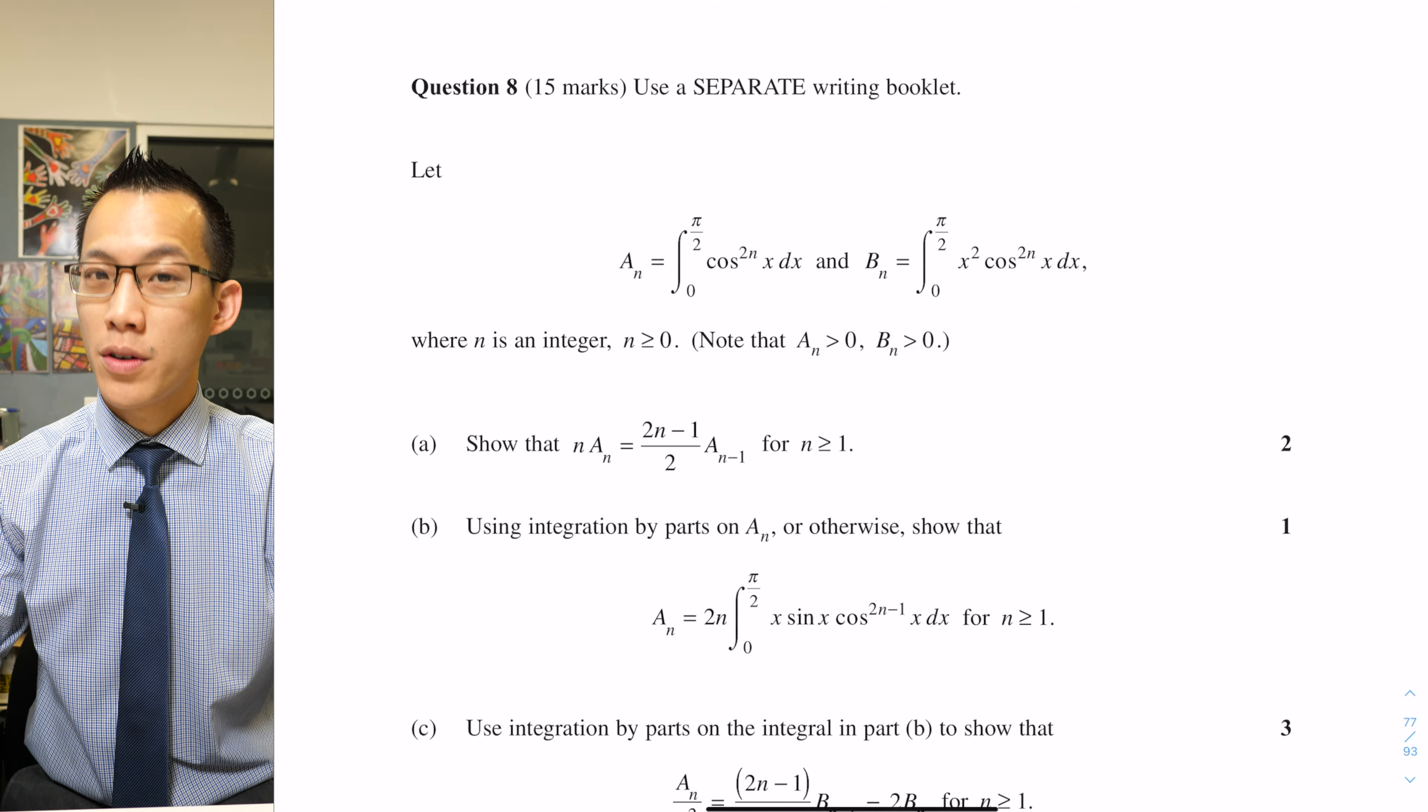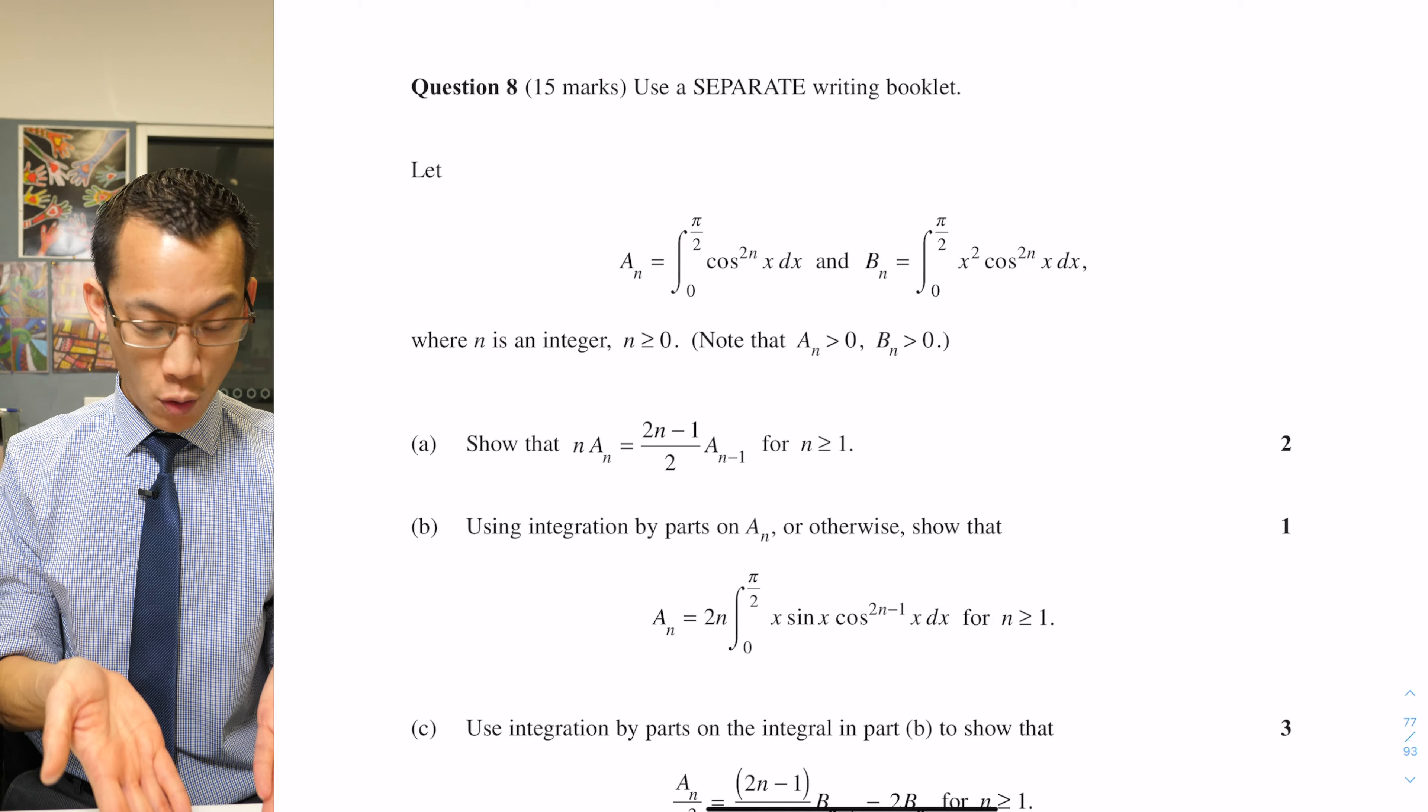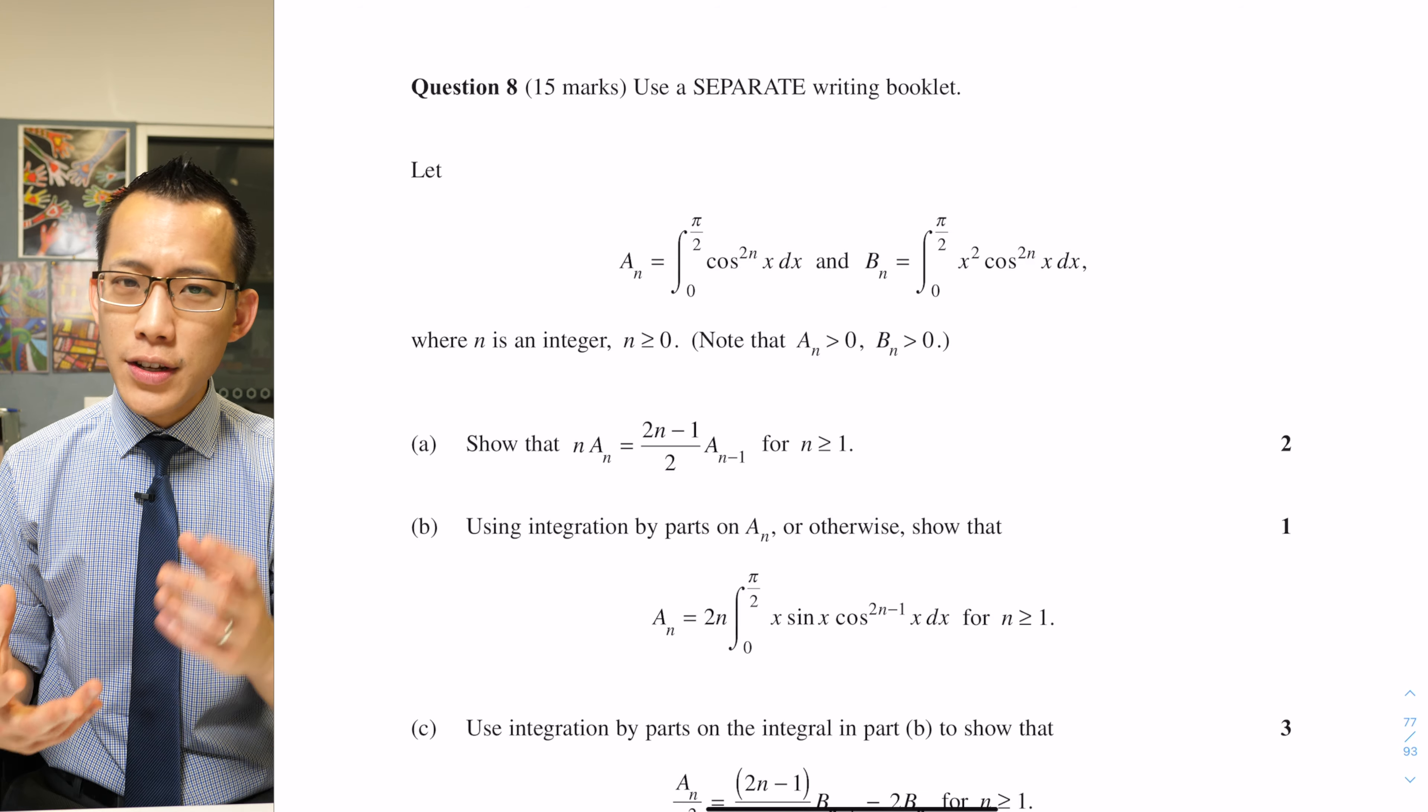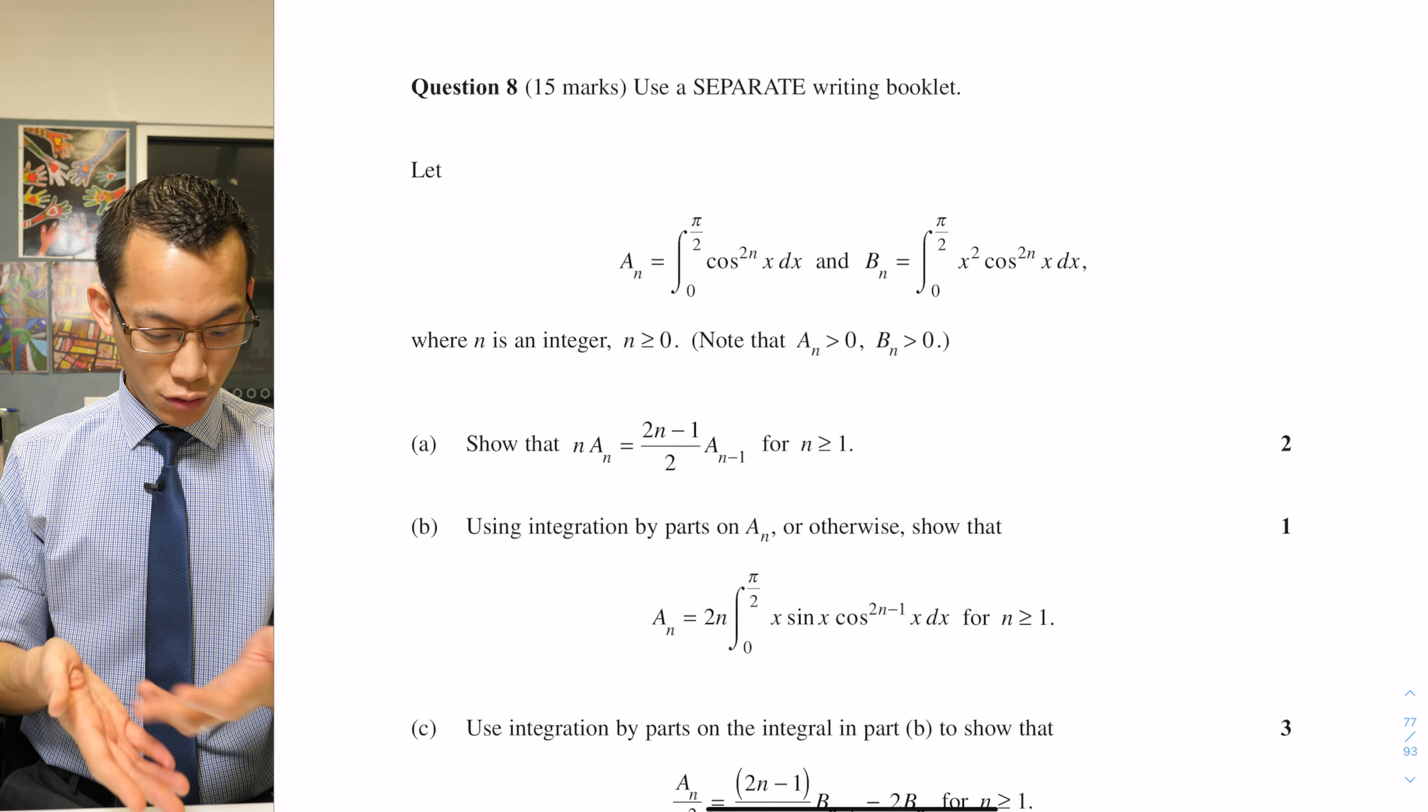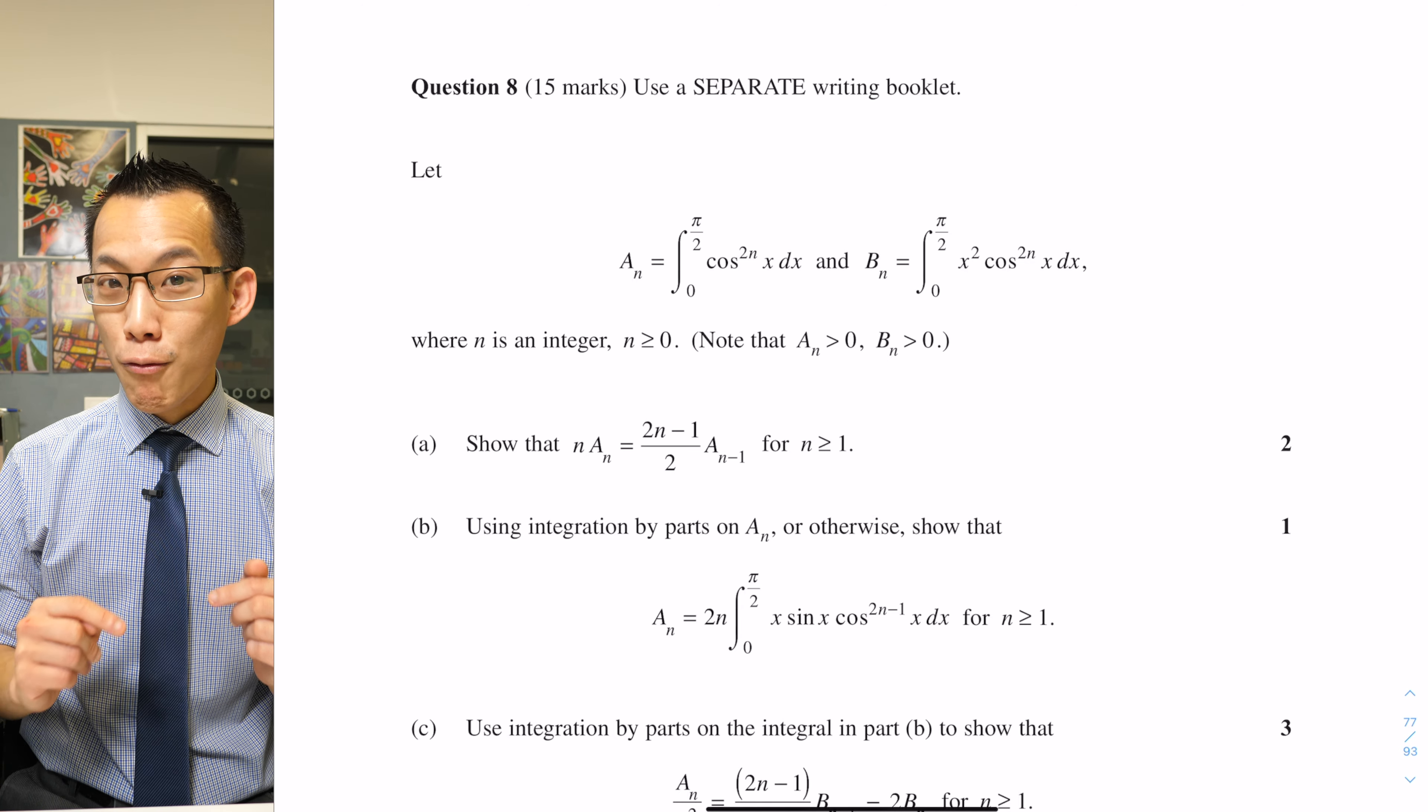This is back in the days when the HSC examinations for Extension 2 were just eight questions. So this question we're looking at right now is the last question, and usually the 15 mark allocation is distributed across a few different parts. You'll see different parts here, but the difference is that all of these parts are really all connected.